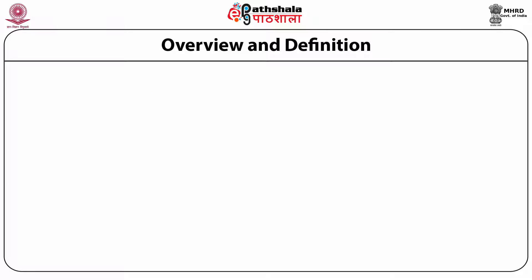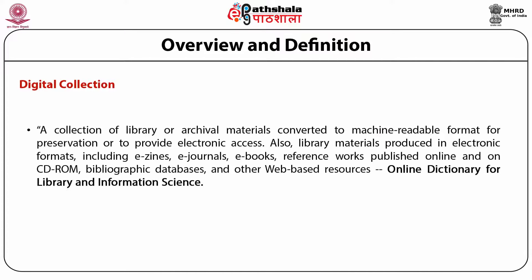As per the online dictionary for library and information science, digital collection is described as a collection of library or archival materials converted to machine-readable format for preservation or to provide electronic access. Also, library materials produced in electronic formats including e-zines, e-journals, e-books, reference works published on CD-ROM, bibliographic databases and other web-based resources.